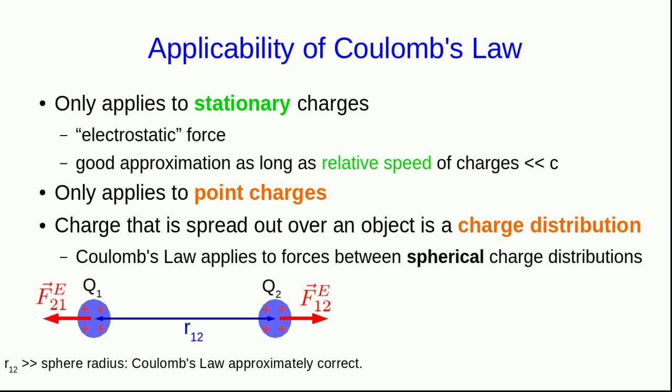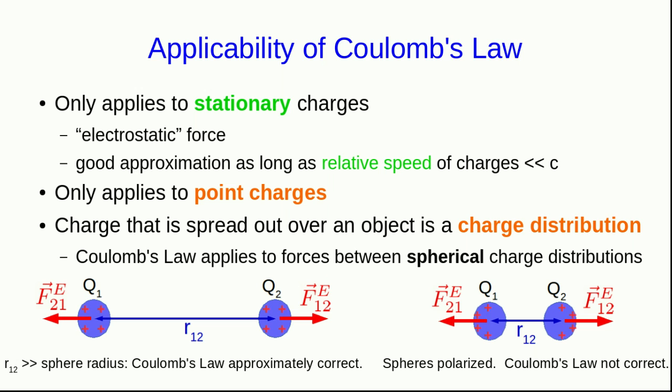However, especially if these objects are made of conducting material, as they come close to each other, they tend to polarize each other. This means that the charge distributions on them are no longer spherically symmetric, and so Coulomb's law is no longer correct for them because the distance between their centers is no longer the same as the distances between the centers of their charge distributions.